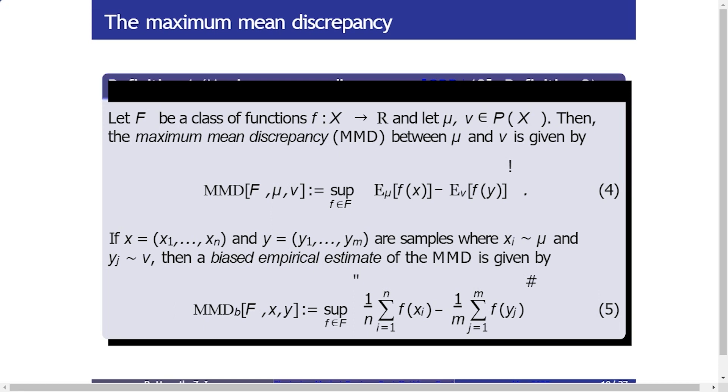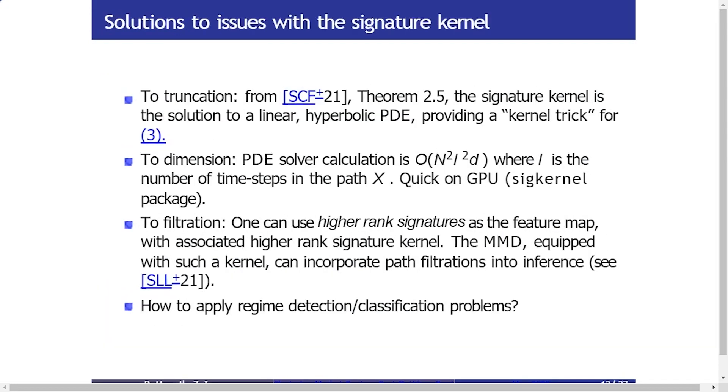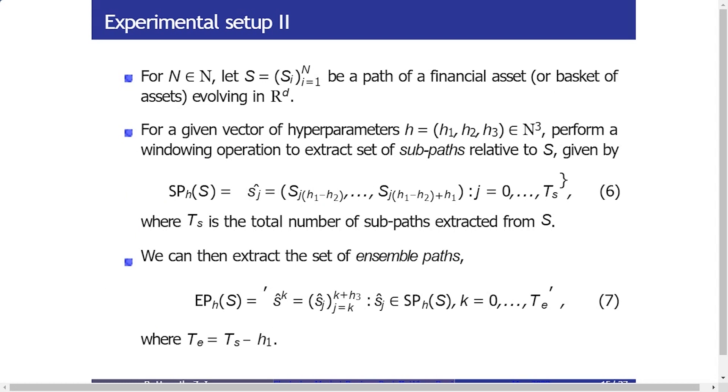So in this way, the MMD is actually a metric on probability measures on compact sets of paths, which means that essentially we can now use it to directly compare sets of paths that we observe with other sets of paths. And then we can use this as a method for regime detection directly on path space.